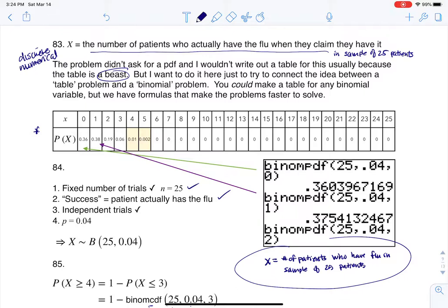Our trials are going to be independent because one patient calling and having the flu has no effect on the next patient calling and having the flu. And our probability of success is about 4%—that's what we're told in the problem.